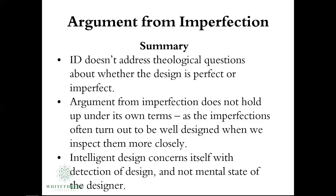Secondly, the argument from imperfection does not hold up under its own terms, as the imperfections often turn out to be well-designed when inspected more closely. The argument from imperfection is like the argument from ignorance — just because Darwinists do not know the details, they think they have the prerogative to claim imperfection. But when the detail is discovered, oftentimes what we find is that the design wasn't imperfect to start with.